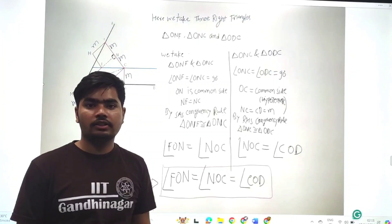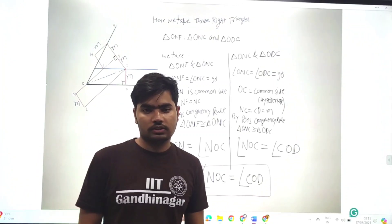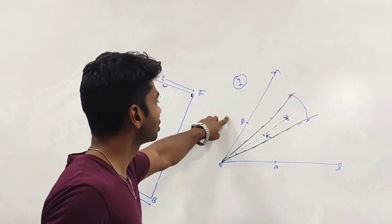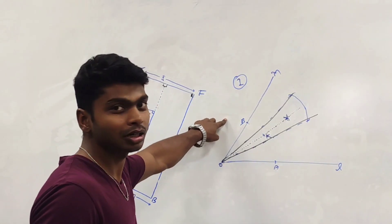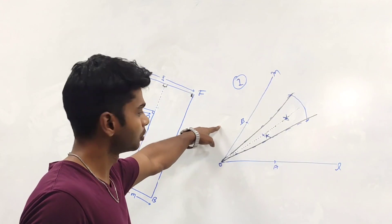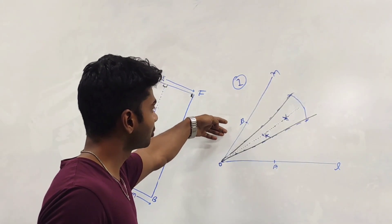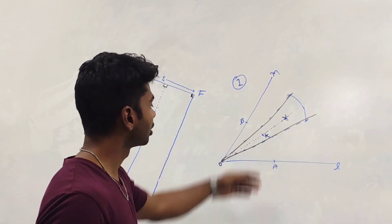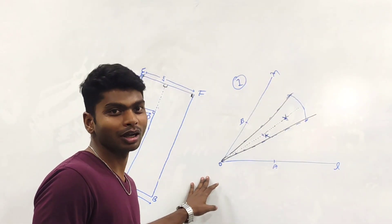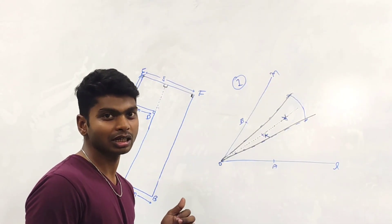Now my friend Thor will summarize the whole process. We can see that the angle is trisected by the ruler and compass, as we have seen in the previous video. Now we can see that the ruler and compass is going to be trisected.